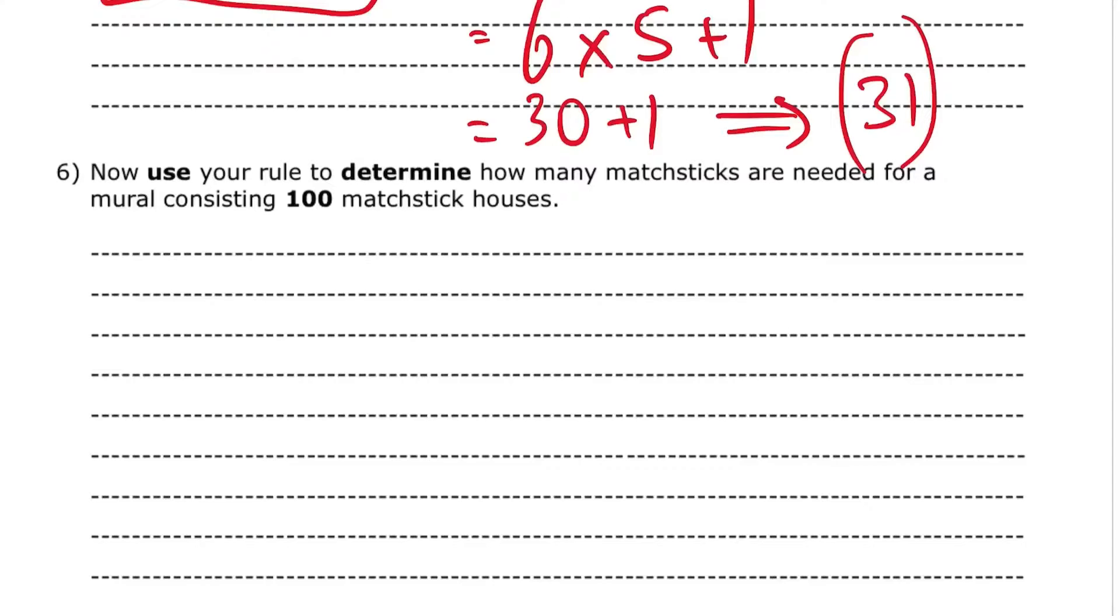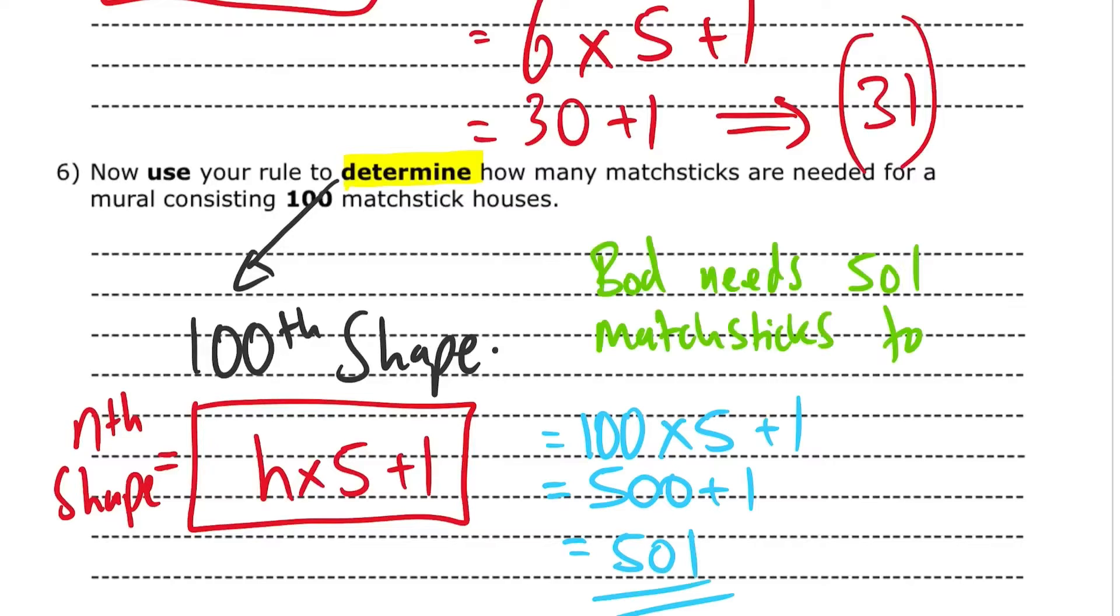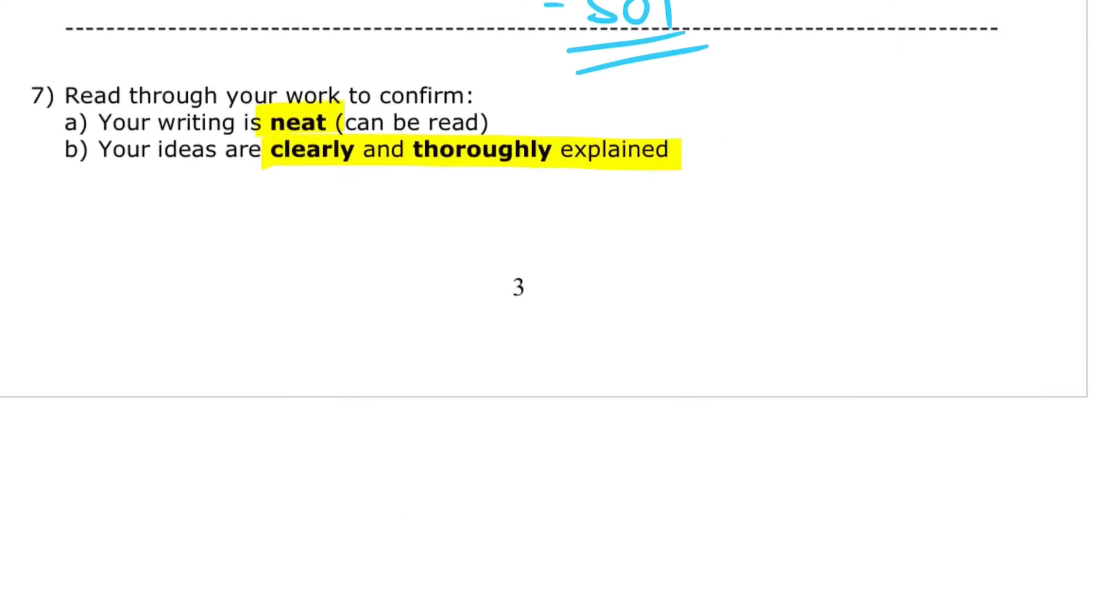Question 6. Now use your rule to determine how many matchsticks are needed for a mural consisting of 100 matchstick houses. Determine actually means find the only possible value. So we're going to show the working out to show our possible value for 100 houses. So remember, this is the hundredth shape. H times 5 plus 1. So here we're going to substitute H for 100. 100 times 5 plus 1 makes 500 plus 1. It's 501. Just make sure your writing is neat and you've clearly communicated and explained your method.